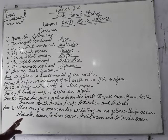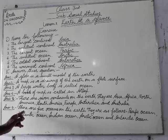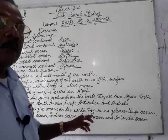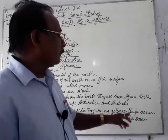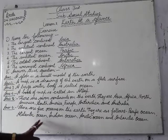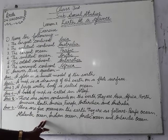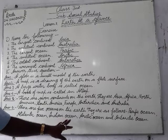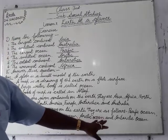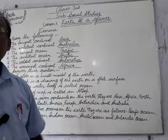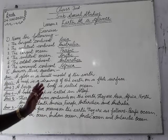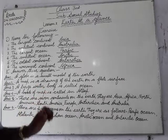Number six: There are five oceans on the earth. They are as follows: Pacific Ocean, Atlantic Ocean, Indian Ocean, Arctic Ocean, and Antarctic Ocean. So children, please note down in your notebook and learn it well. Thank you.